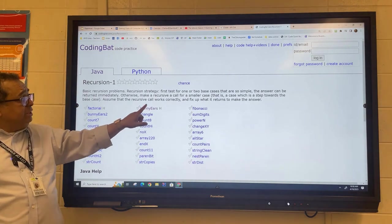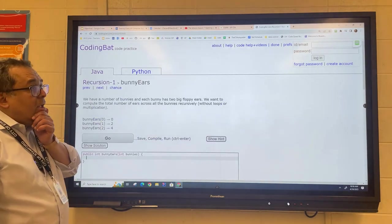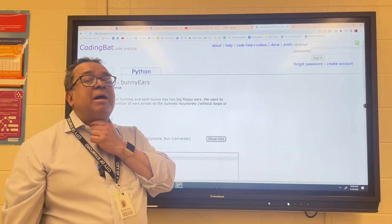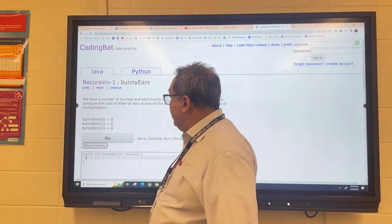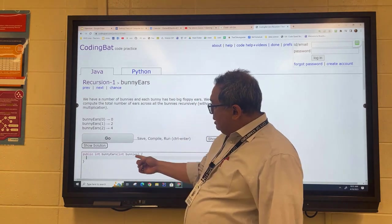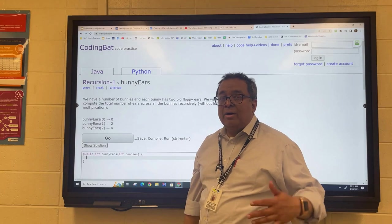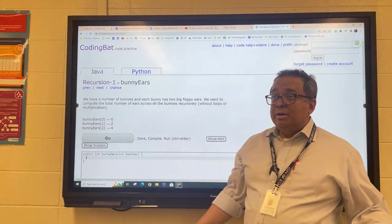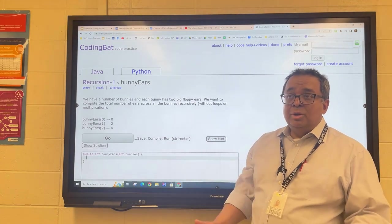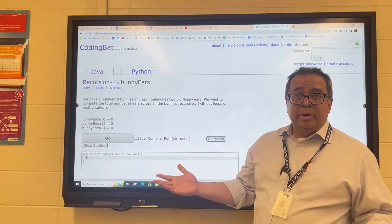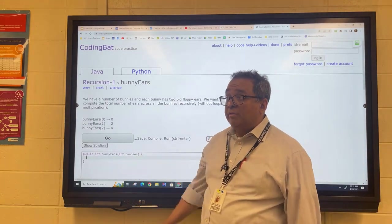We're going to skip this factorial one because we're going to tackle that one after lunch on paper. I'm going to ask you to go over to this bunny ears problem right now. The bunny ears problem is a nice simple problem to start with. They give you so many bunnies, and they want to know how many ears in total do they have. Obviously, we could do this very simply. If we have four bunnies, we just multiply by two, we get eight ears. That would be a simple way to do it without recursion. But we're going to show you how this problem can be solved recursively.